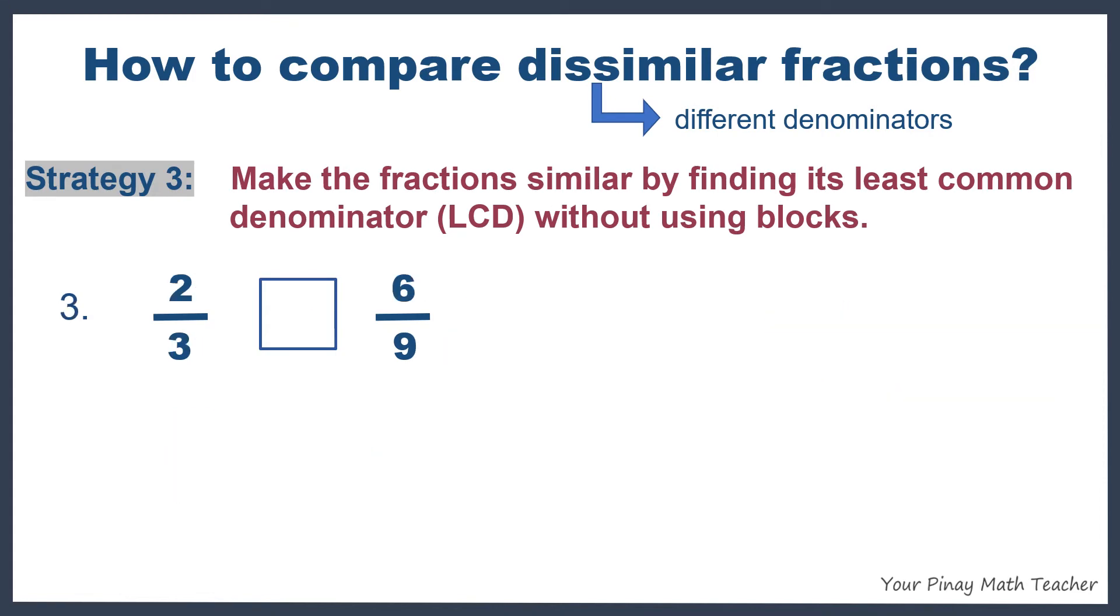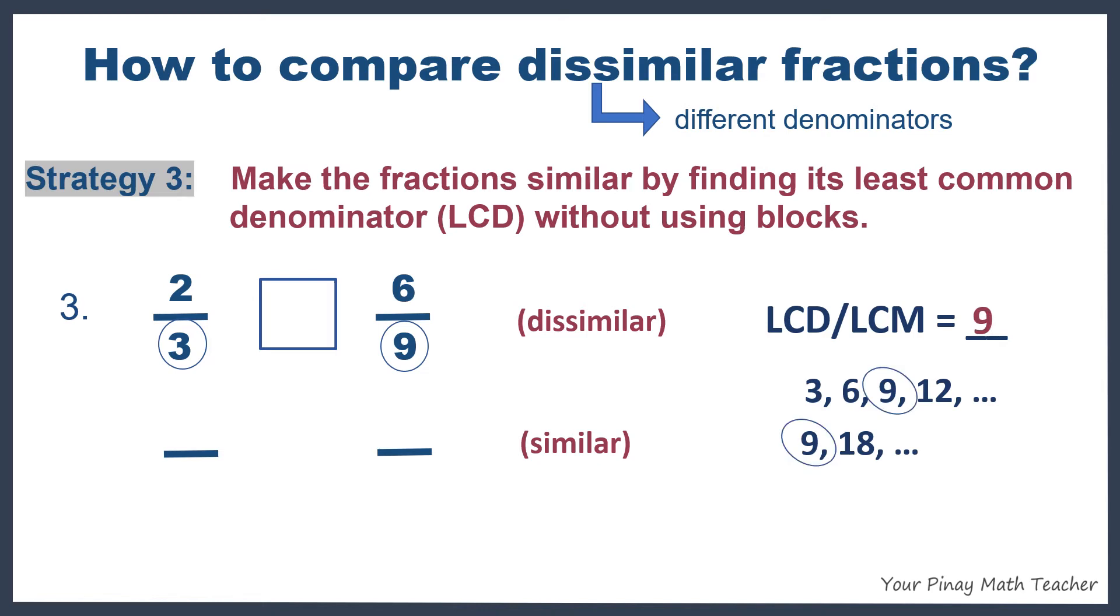Number 3, 2 thirds and 6 9ths are dissimilar fractions because they have different denominators. We have to make them similar by finding its LCD or LCM. List the first few multiples of 3, which are 3, 6, 9, 12, and so on. And multiples of 9, we have 9 and 18 and so on. So obviously, our LCM or LCD here is 9,